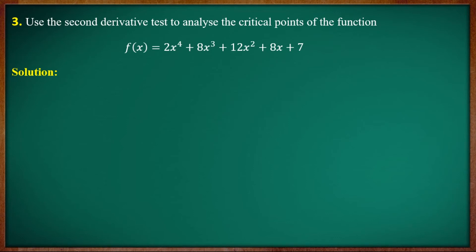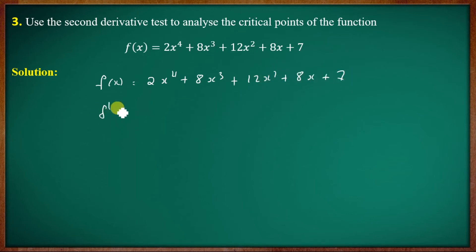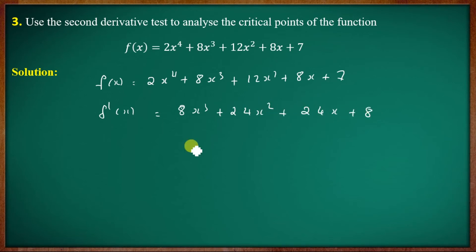Use the second derivative test to analyze the critical points of the function f of x equal to 2x to the power 4 plus 8x cube plus 12x square plus 8x plus 7. The first derivative of f of x is equal to 8x cube plus 24x square plus 24x plus 8.